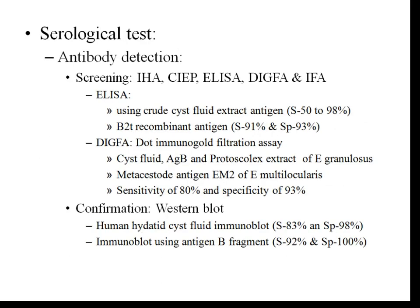Serological tests help in the diagnosis of hydatid disease by detecting antibody or antigen. Antibody detection tests are divided into screening and confirmatory tests. Screening tests are based on indirect hemagglutination, counter-immunoelectrophoresis, ELISA, dot immunogold filtration assay, and indirect fluorescent antibody assay. ELISA is the most commonly used test. Previously, crude cystic fluid extract antigen was used, with variable sensitivity of 50–98% and low specificity. It has now been replaced with the B2T recombinant antigen ELISA, which has a sensitivity of 91% and specificity of 93%.